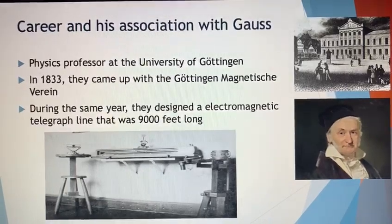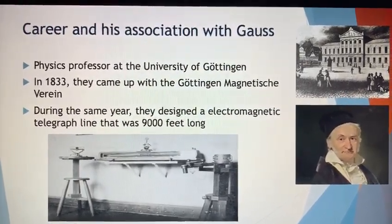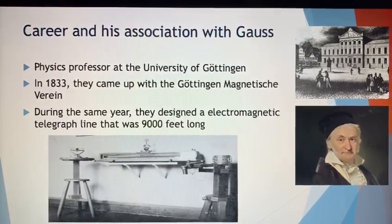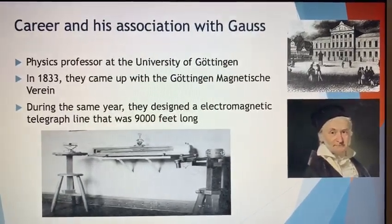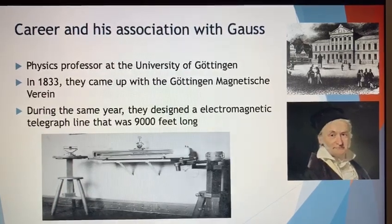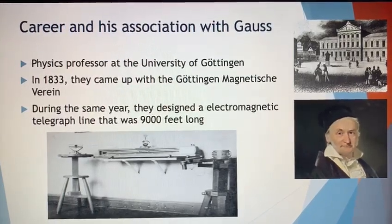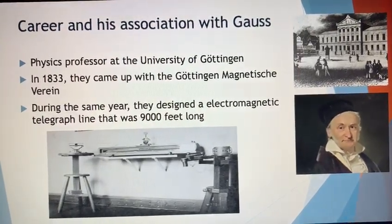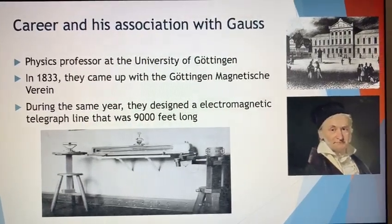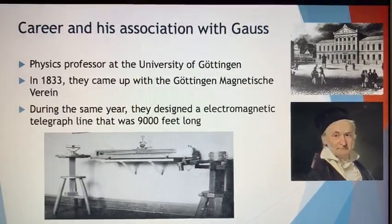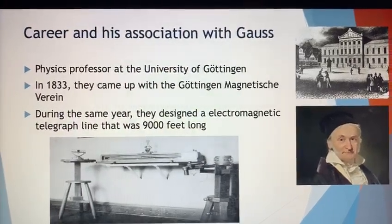Following that, in 1833, they came up with the Göttingen Magnetischer Verein, which was a project that aimed to measure the way in which the Earth's magnetic field fluctuates. Later, they designed the first long electromagnetic telegraph, which was about 9,000 feet long. Below is the picture of the electromagnetic telegraph. On the top right corner is the University of Göttingen, and right below that picture is the picture of Professor Gauss.